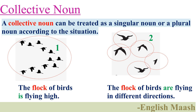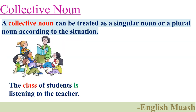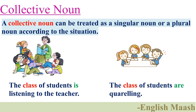In picture number two, each bird is considered separately, so we use rules of plural nouns: the flock of birds are flying in different directions. We use 'are' because we consider the flock of birds as a plural noun. Similarly, one more example: the class of students is listening to the teacher. The class of students are quarrelling. In the first sentence, 'is' is used; in the second sentence, 'are' is used with the class of students.